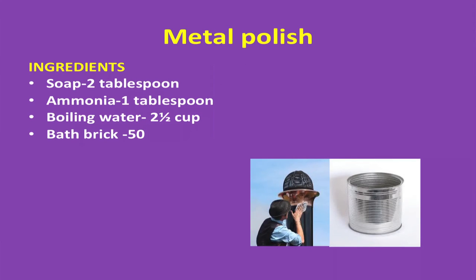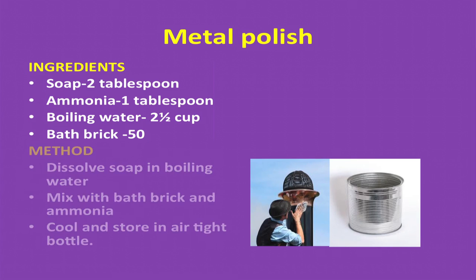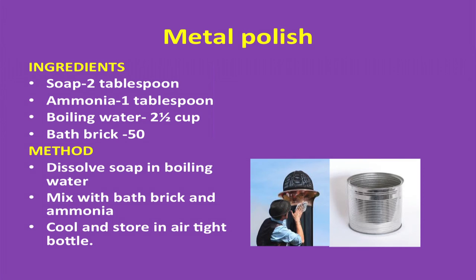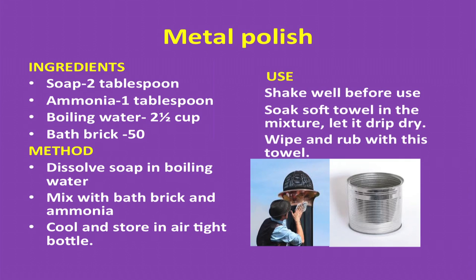Metal polish — ingredients: soap 2 tablespoons, ammonia 1 tablespoon, boiling water 2 and a half cups, bath brick 50 grams. Method: dissolve soap in boiling water, mix with the bath brick and ammonia, cool, and store in an airtight bottle. Use: shake well before use, soak a soft cloth in the mixture, let it drip dry, then wipe and buff with the cloth.